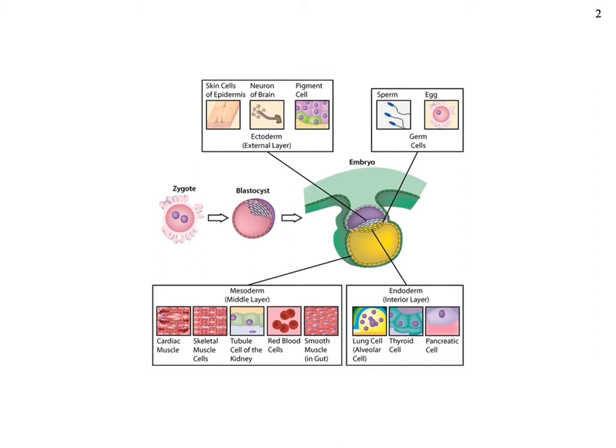We're going to start from the beginning at the zygote. Sperm and egg get together and we form a single cell called a zygote. That one single cell is going to go through division — one becomes two, two becomes four, four becomes eight, eight becomes 16, 16 becomes 32. You get the idea.